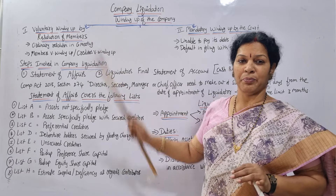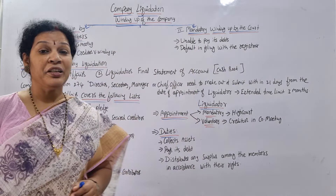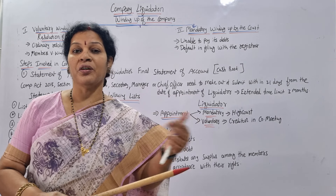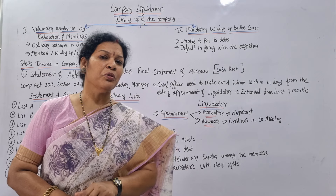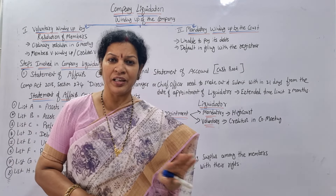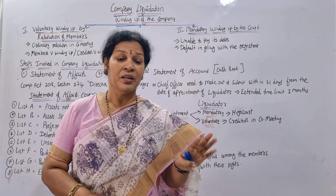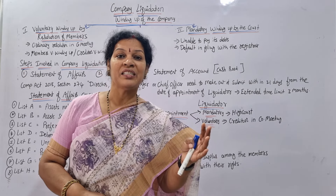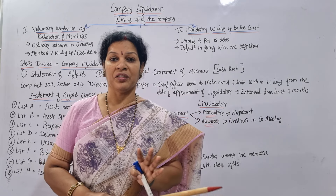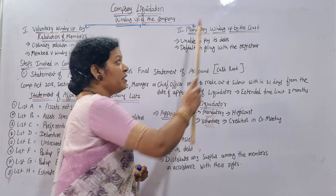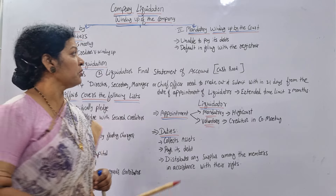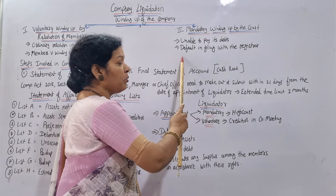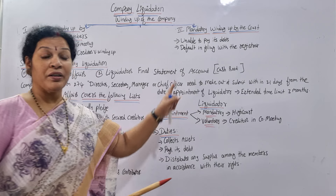The second type is mandatory winding up, also called compulsory winding up. This is decided by the court. The court will give such a judgment if any illegal activities are going on, if the company is not preparing accounts properly, or if false information is present. Whenever such activities are found, the court winds up the company — that is mandatory or compulsory winding up. Cases include inability to pay debts or default in filing with the registrar.